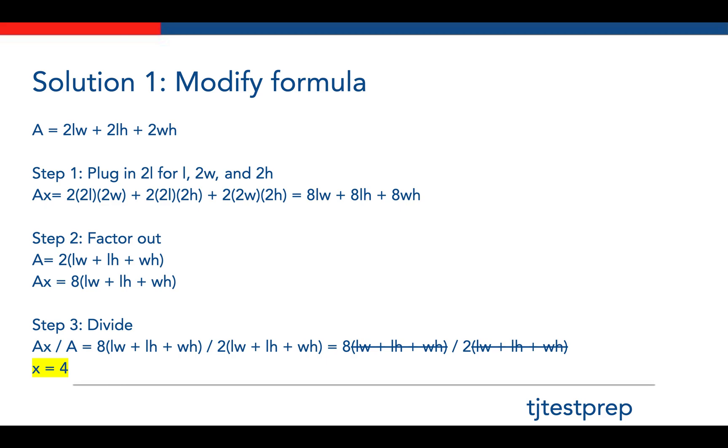A lot of people may get into the trap of wrongly multiplying this out, but you have to plug in 2L into L itself, and 2W into W itself. Here we have A times X, and X is just the amount that A is going to be multiplied by. That's what we have to solve in this problem.